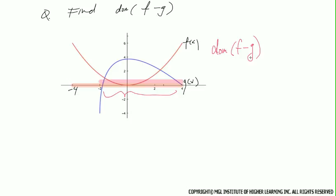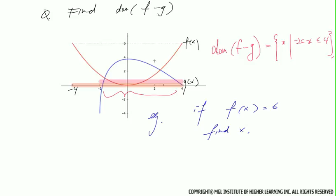Yeah, in this graph of f, if f equals 6, what is x? That's right. So here's a 6 right on the function f. It's going to be 4 or minus 4. So x is going to be 4 or minus 4.